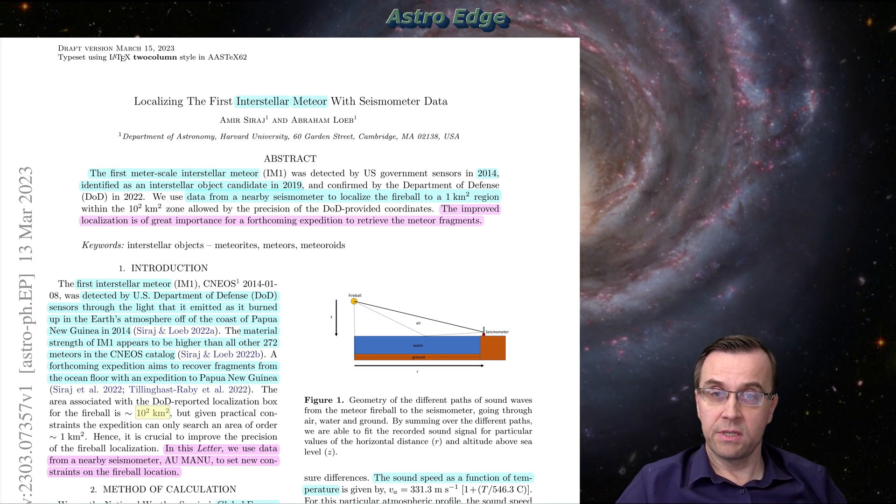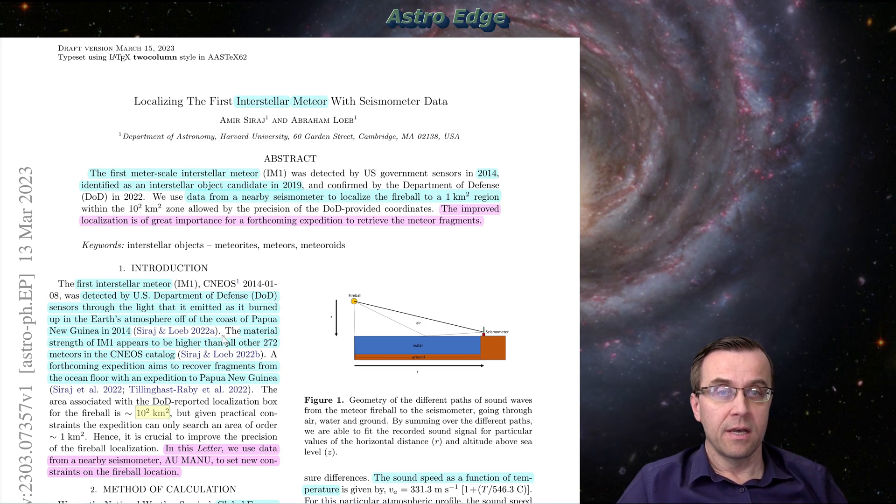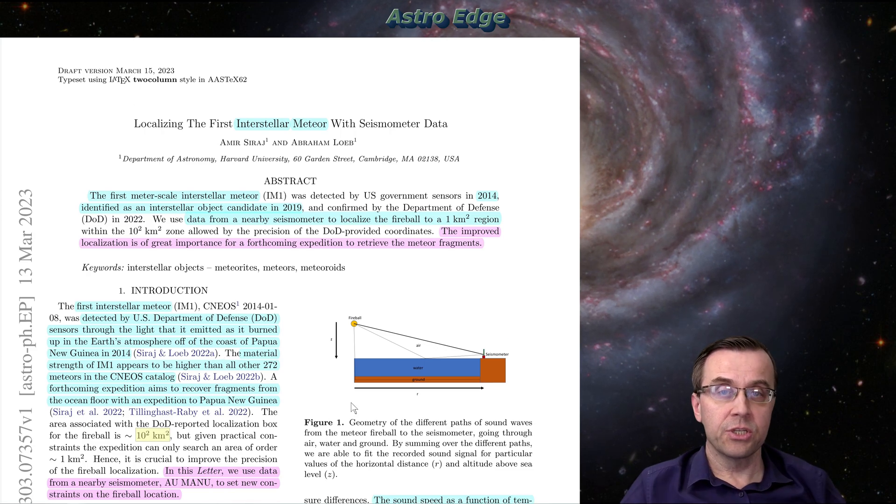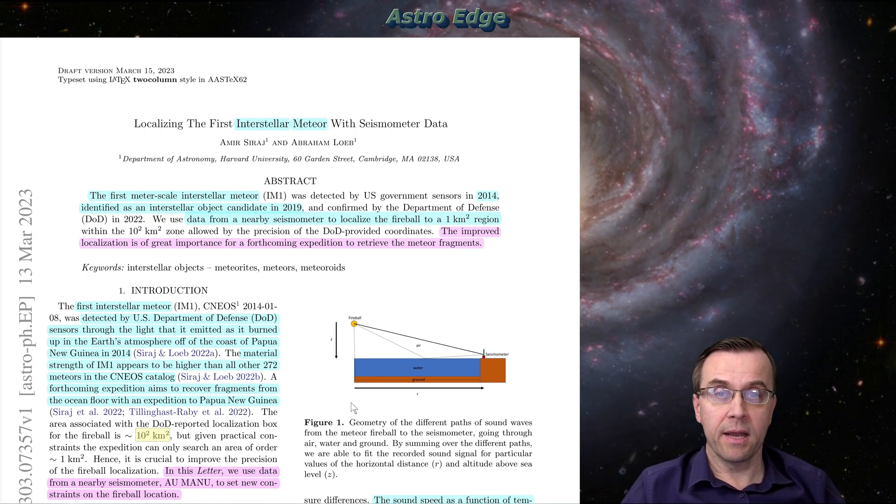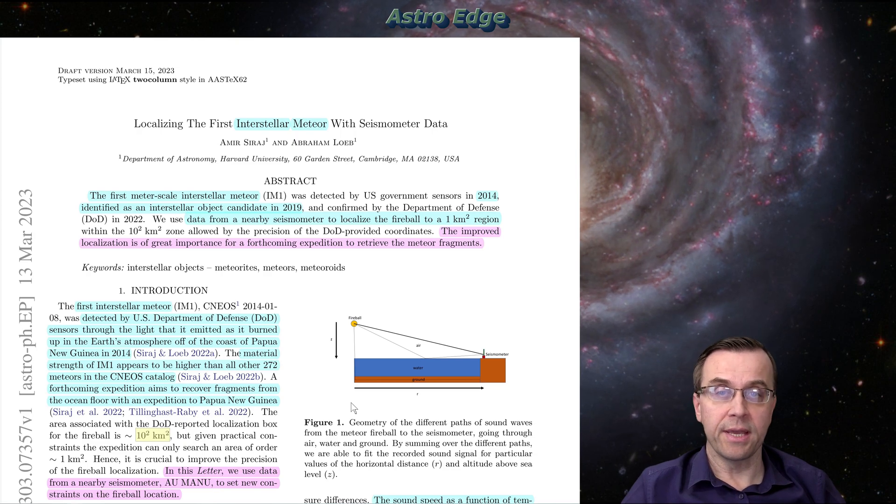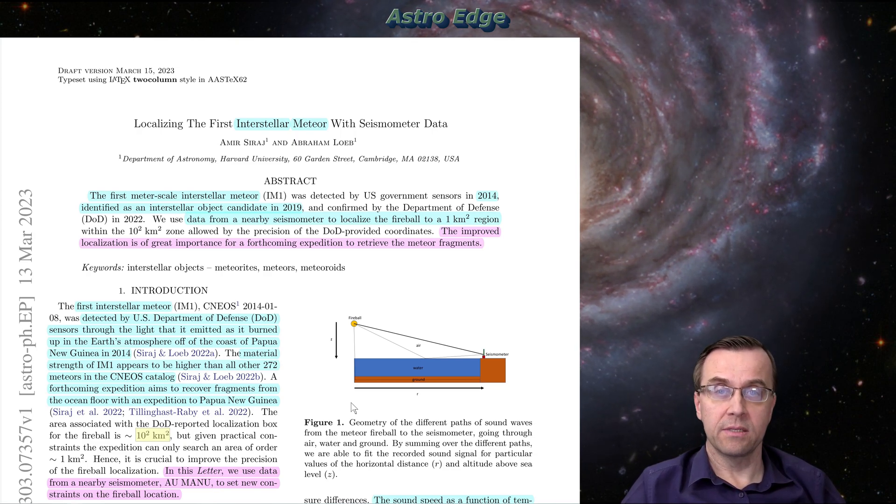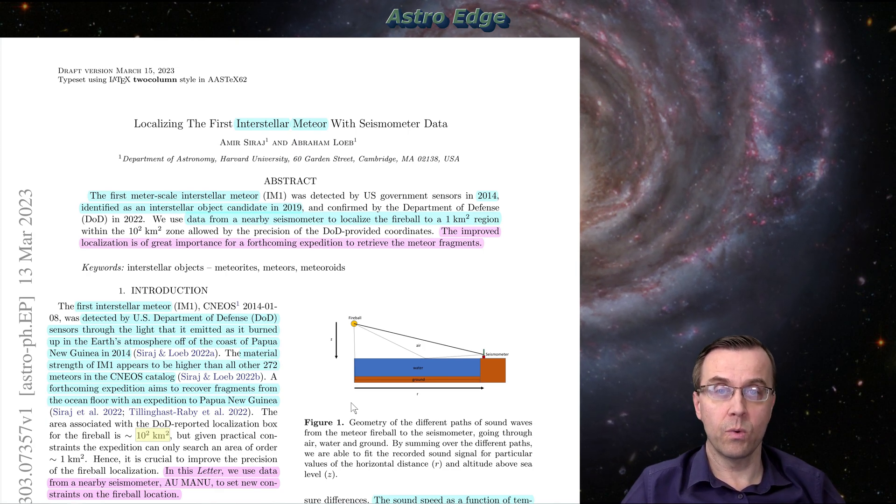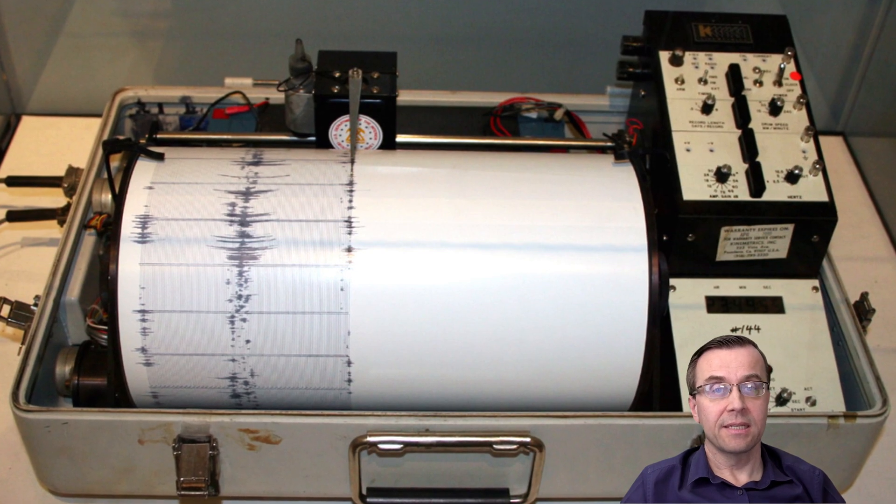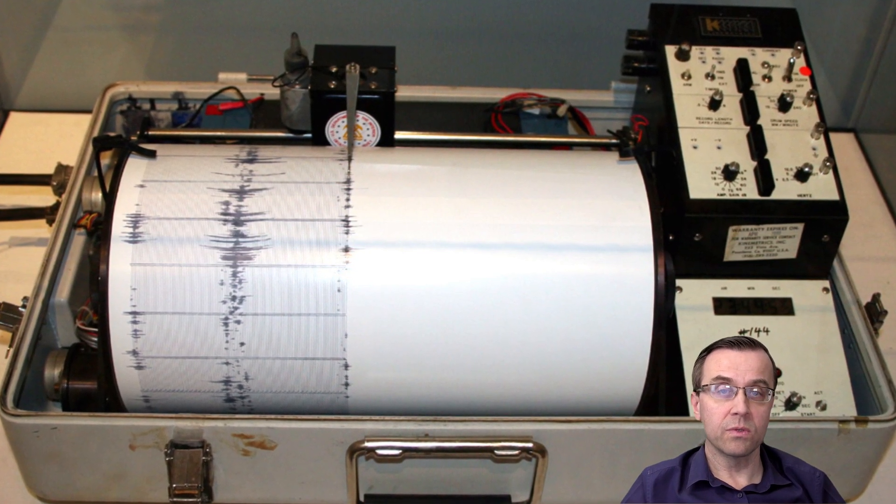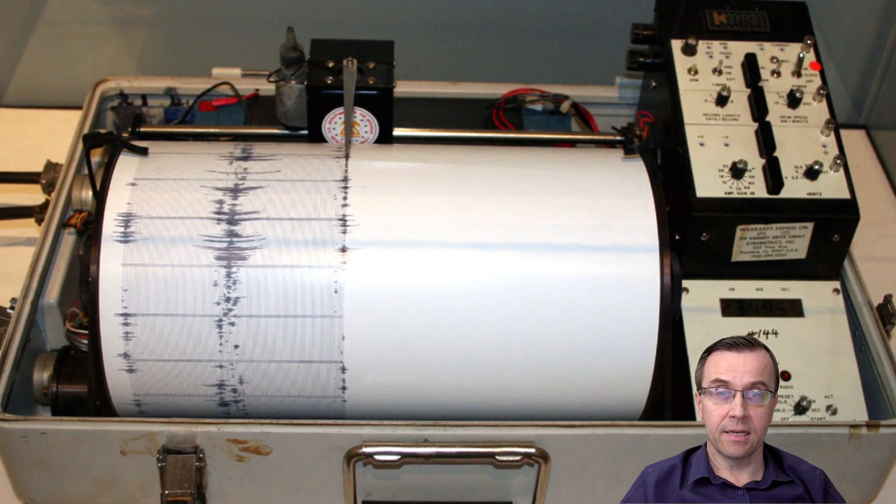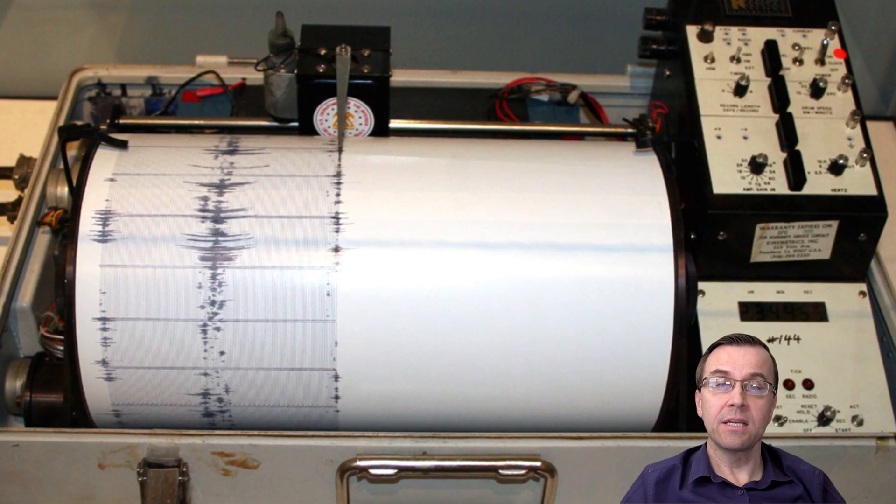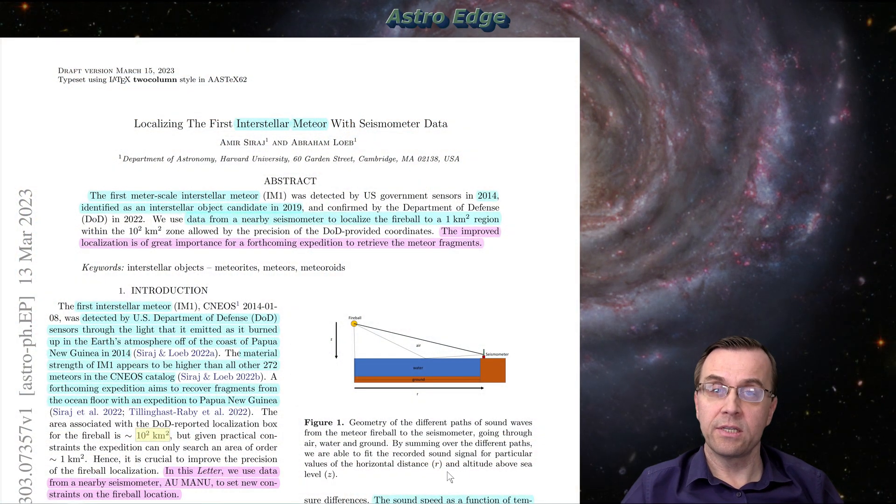So what the authors of this paper did, they found seismic data about that event. When such a large explosion happens, it is normal to expect that the ground will be shaking, there will be some sound waves, shock waves going through the air, through the ocean, through water and through the land. There are lots of seismic sensors spread out around the world, which main purpose is to detect earthquakes. It happened that one of those sensors managed to record the explosion from the interstellar meteor in 2014.